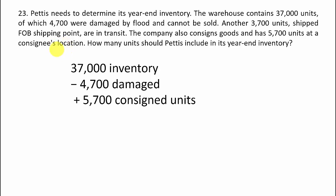How many units should Pettis include in inventory? It should be based on those three adjustments — starting with 37,000, subtracting the damaged and in-transit units, and adding the consigned units — adding up to 38,000 units.